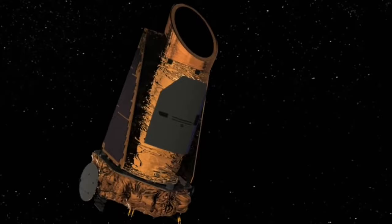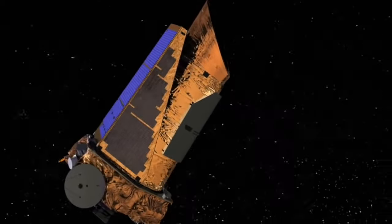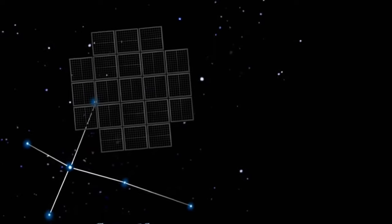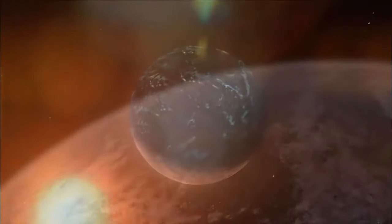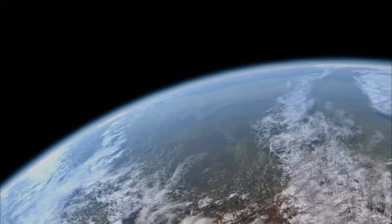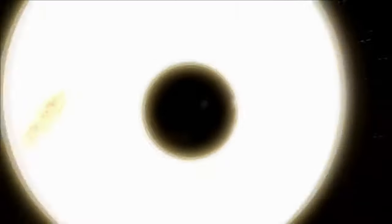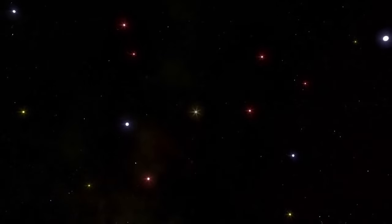Kepler continued to collect data until May 2013, when the guidance system failed and it lost its steady lock on the stars it had watched so keenly. But the hunt for alien planets is far from over. Kepler may have a second life using pressure from sunlight to keep it oriented. And in coming years, new planet hunters will take up the quest, exploring the age-old question: Are we alone?